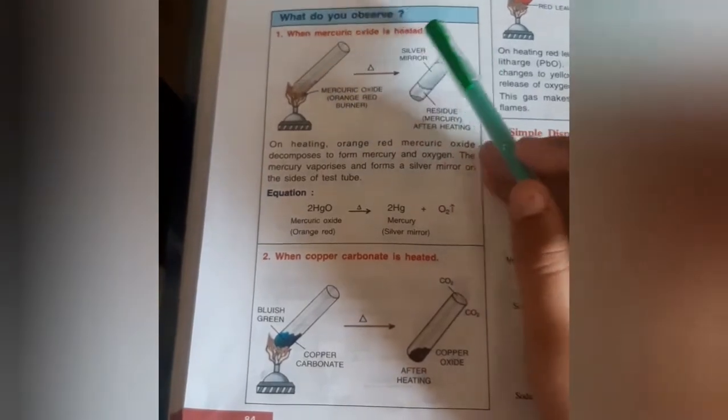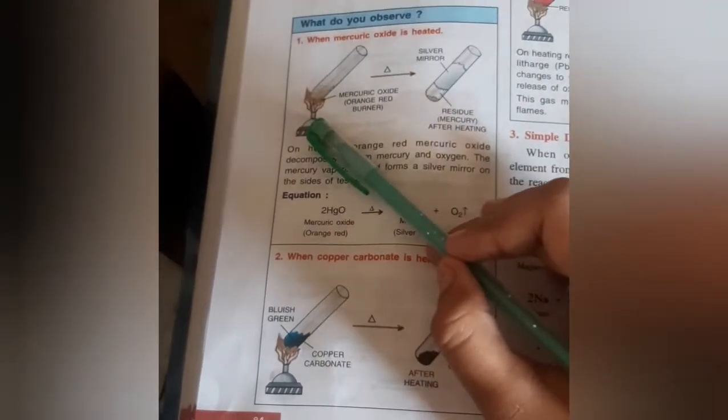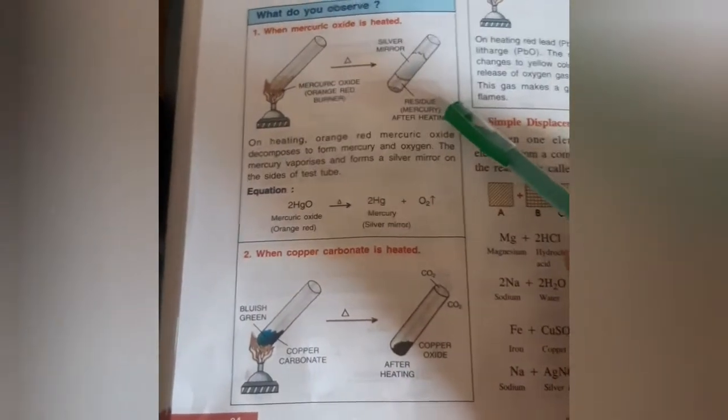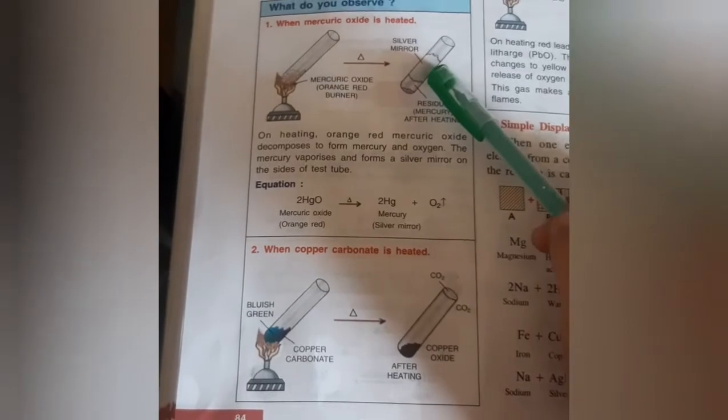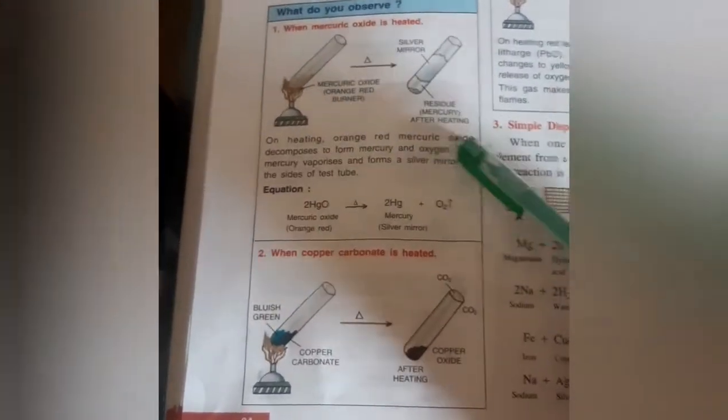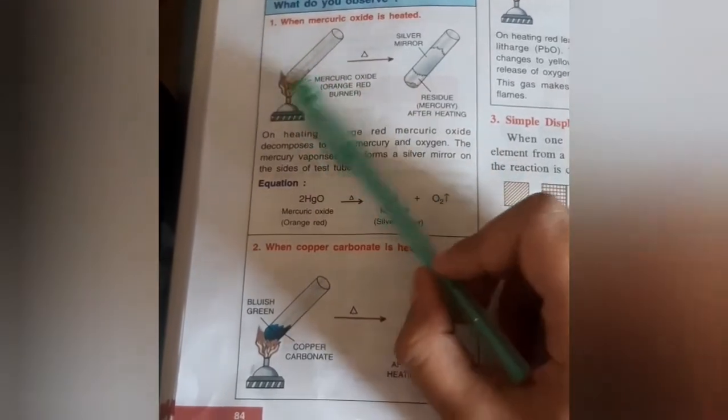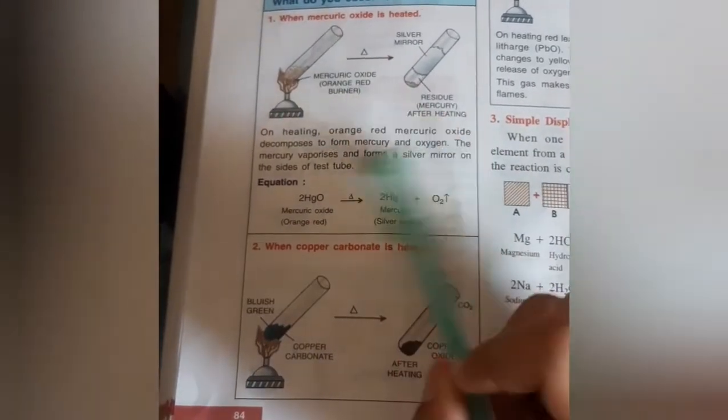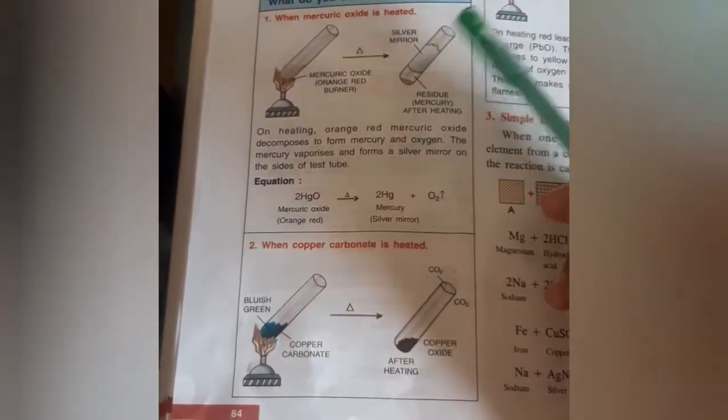Next question is: what do you observe when mercury oxide is heated? Orange-red mercury oxide is placed under a burner. On heating, orange-red mercury oxide decomposes to form mercury and oxygen.